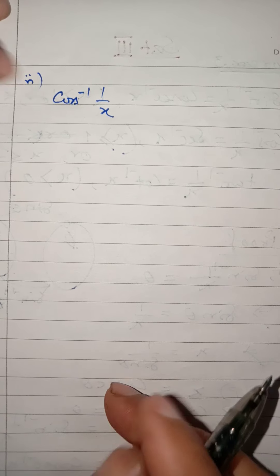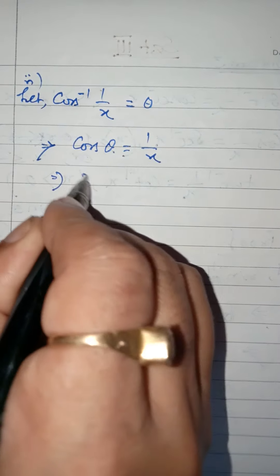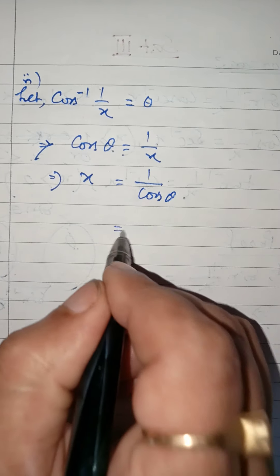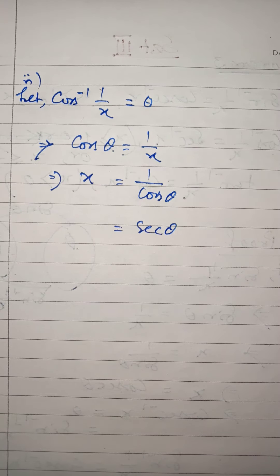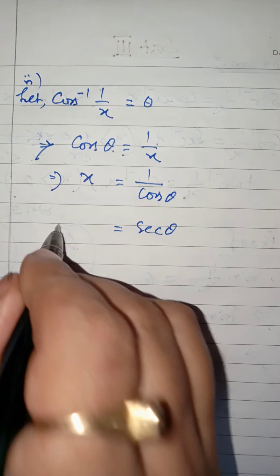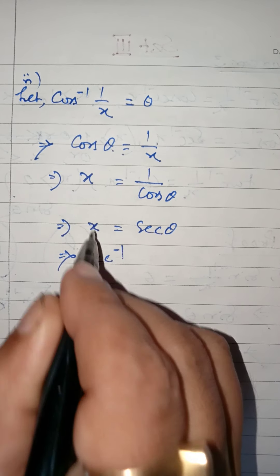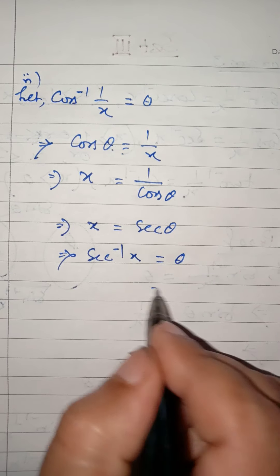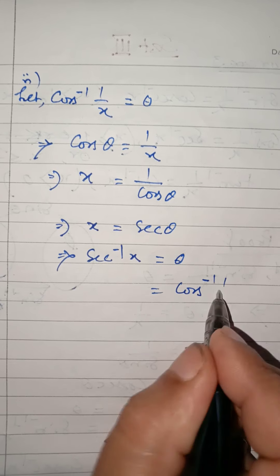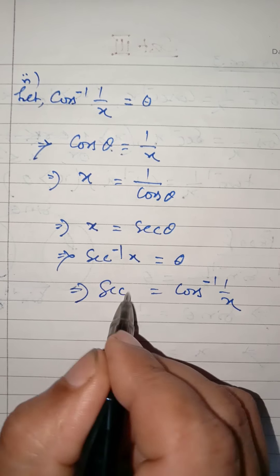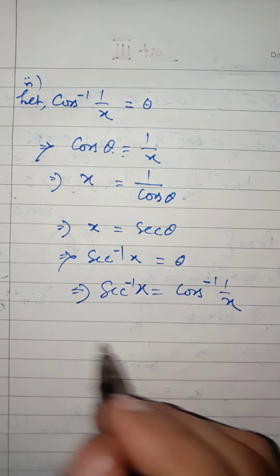Similarly, we can prove the second result. Suppose cos inverse of 1 by x equals theta. Then cos θ equals 1 by x. Rearranging, x equals 1 by cos θ, and 1 by cos θ is sec θ. So x equals sec θ, which means sec inverse x gives output θ. And θ is nothing but cos inverse 1 by x. Therefore, cos inverse 1 by x is equal to sec inverse x. This completes the proof.